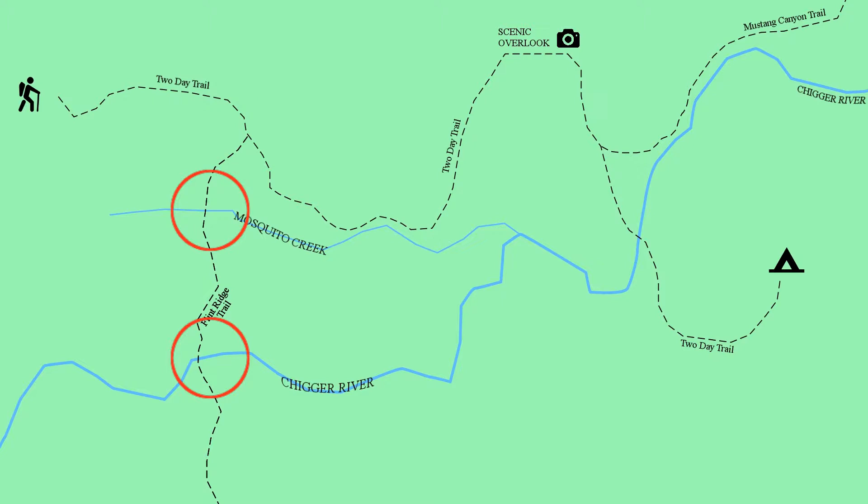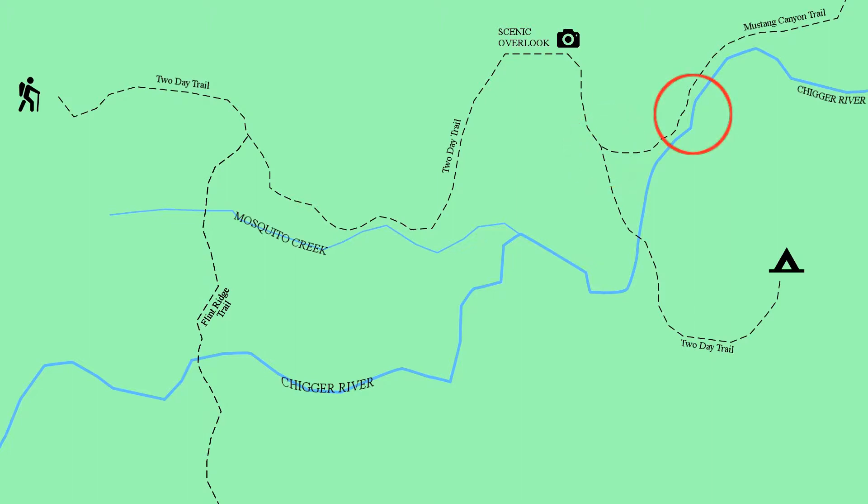But let's make it a little bit more complicated by introducing Flint Ridge Trail and Mustang Canyon Trail. There are now an additional five waypoints on this map. One is where the Flint Ridge Trail meets Two Day Trail, as well as where it crosses both Mosquito Creek and the Chigger River. The other two are where the Mustang Canyon Trail meets the Two Day Trail, and where the Mustang Canyon Trail parallels Chigger River and uses it as a handrail.